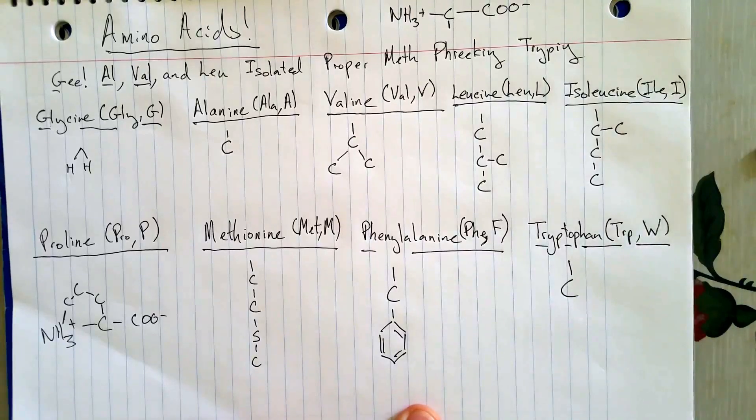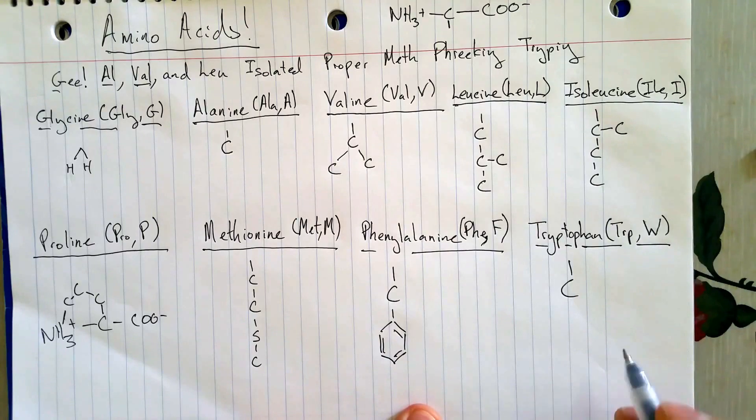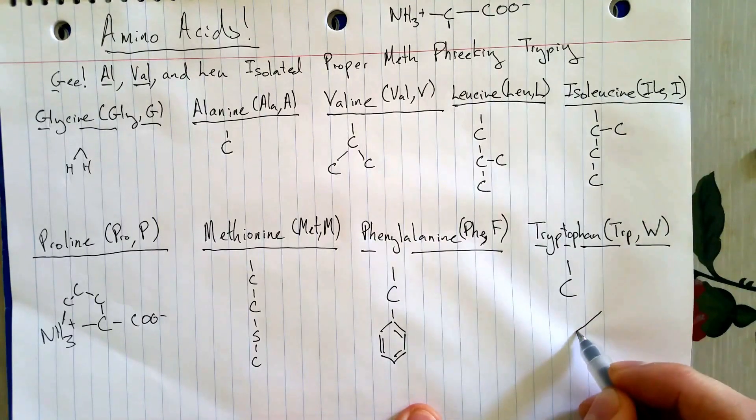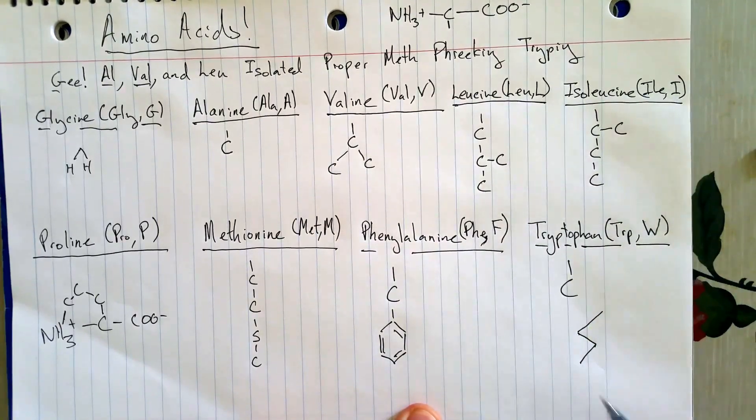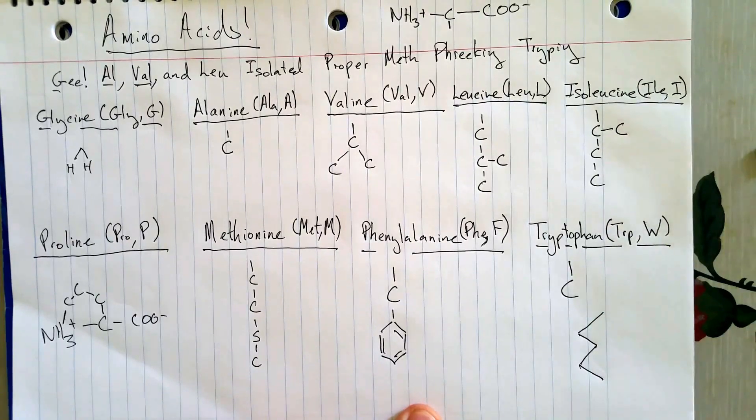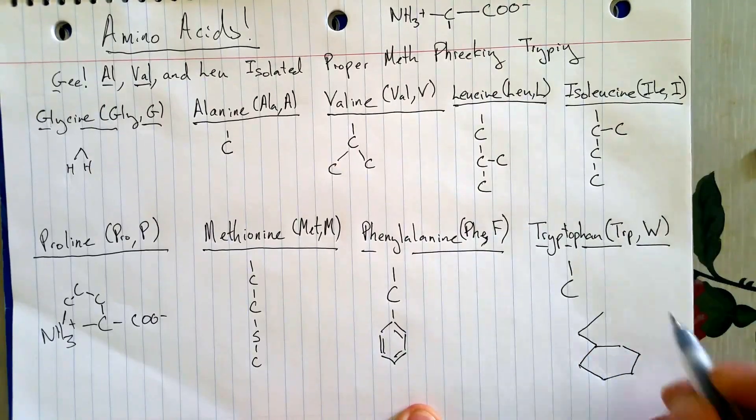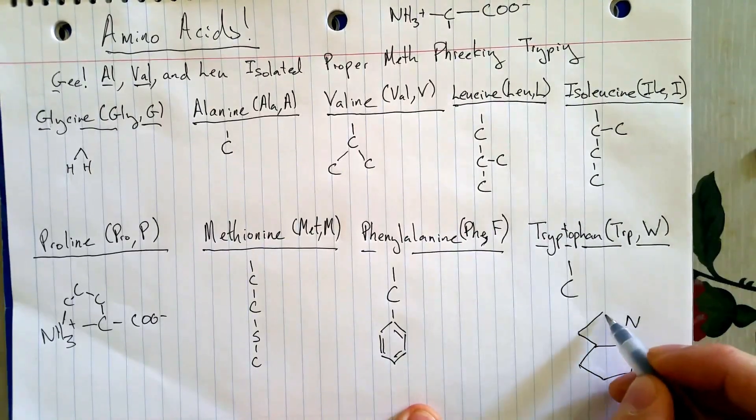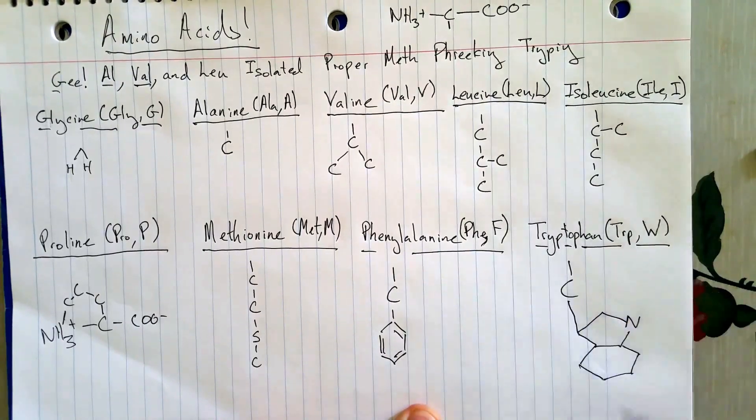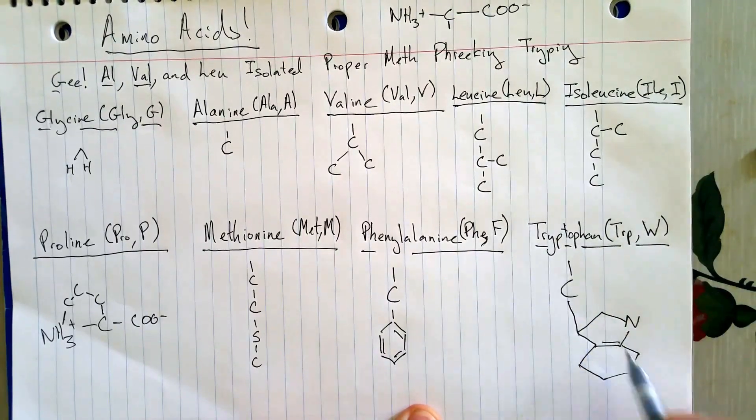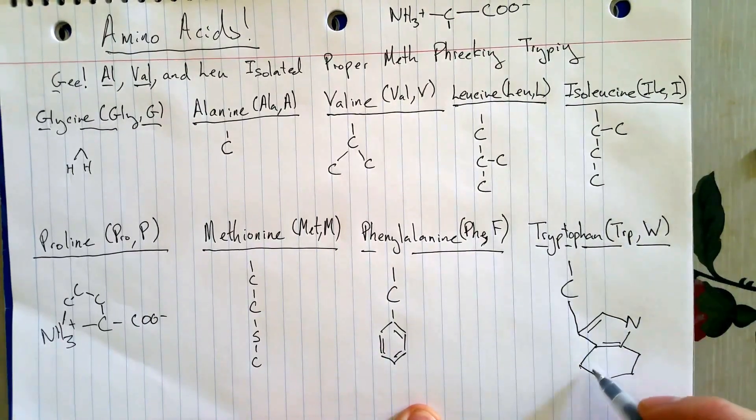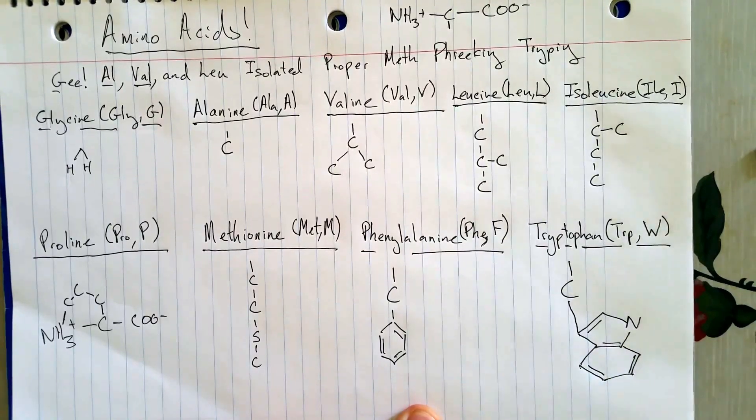Now, for this one, what we're actually going to do is use that W and make it part of the structure. So you get that W, there's a benzene ring here, some nitrogen there, and it joins up like that. And you got some double bonds. There you go. That is tryptophan.